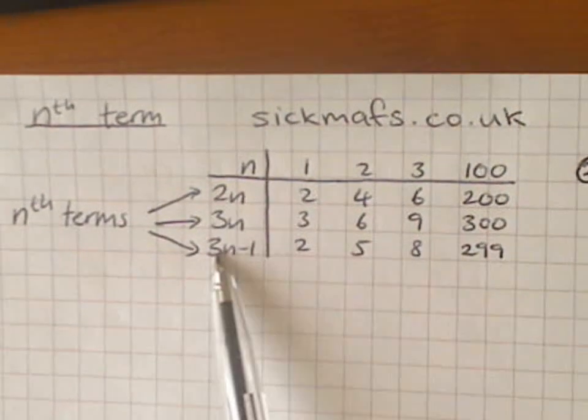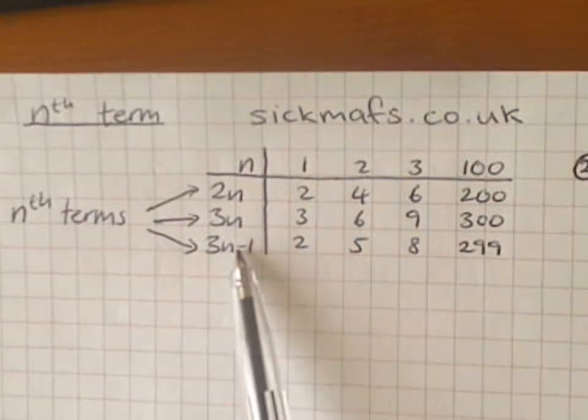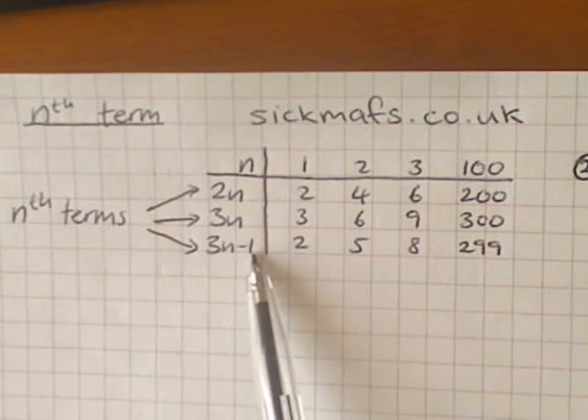So, it's 3n minus one. 3n means three times table. 3n minus one means one less than the three times table.